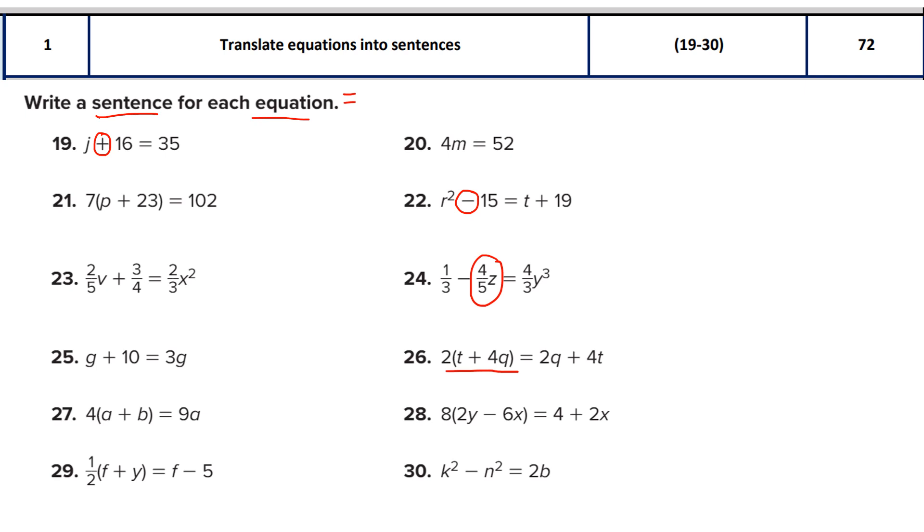You will also see some variables like the unknown values. For example, here the variable is j, in this question the variable is m, in this question the variable is p, here the variable is t and so on. So we are going to use these variables, these numbers, these symbols - addition, multiplication, subtraction, division - all of them together to do these kind of questions. Let's do them one by one.